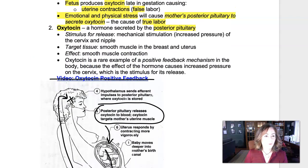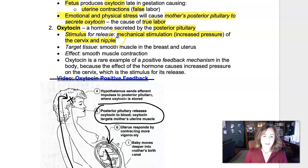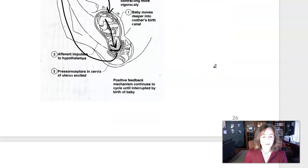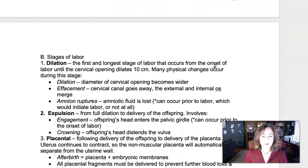The stimulus for oxytocin release is mechanical stimulation — pressure on the cervix. Also, pressure on the nipple will cause oxytocin release, so oxytocin is released when nursing an infant. The target tissue is smooth muscle in the breast and in the uterus. It's a strong smooth muscle contractant and it operates via a positive feedback mechanism.